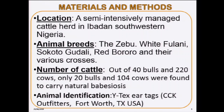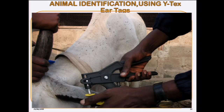We used a semi-intensively managed cattle herd. The breeds of cattle used were the zebus — the animals in Africa that have humps — including White Fulani, Sokoto Gudali, Red Bororo, and two or three of their crosses. On this farm, we had 40 bulls and 220 cows, but only 20 bulls and 104 cows were found to carry natural babesiosis. The animals were identified using white ear tags so that we could follow up the treatment and sample collection.